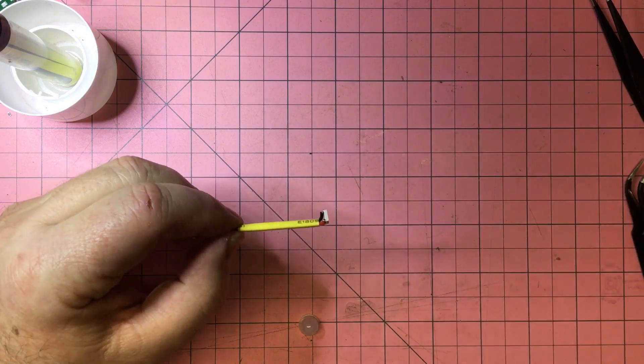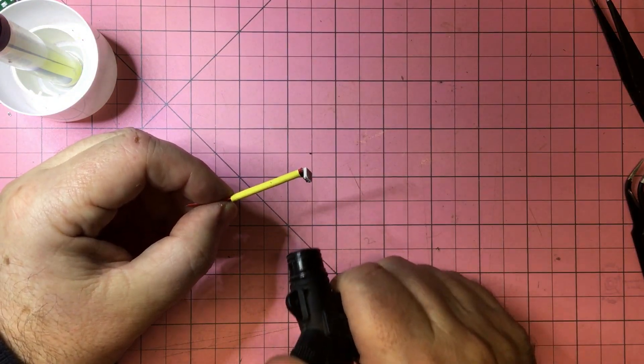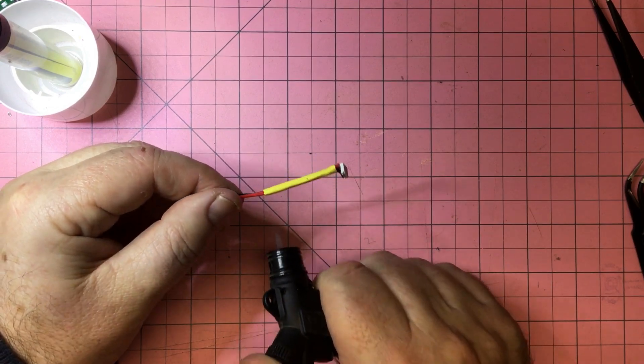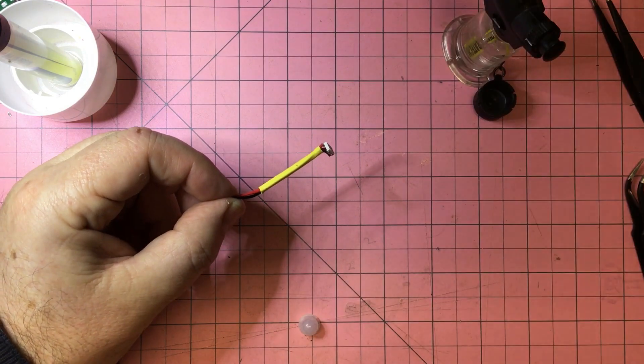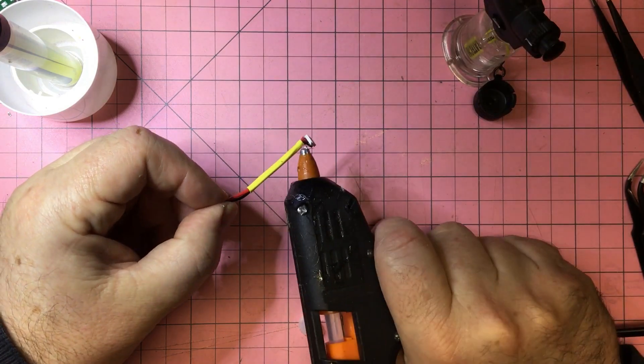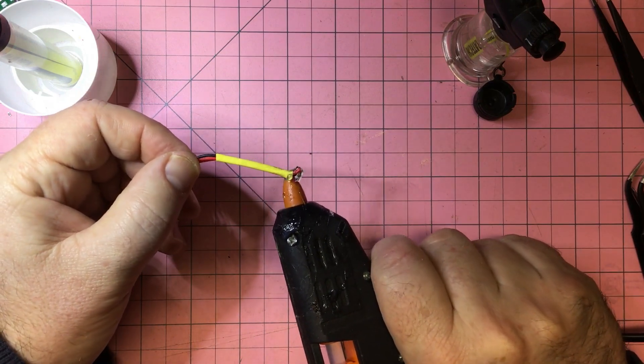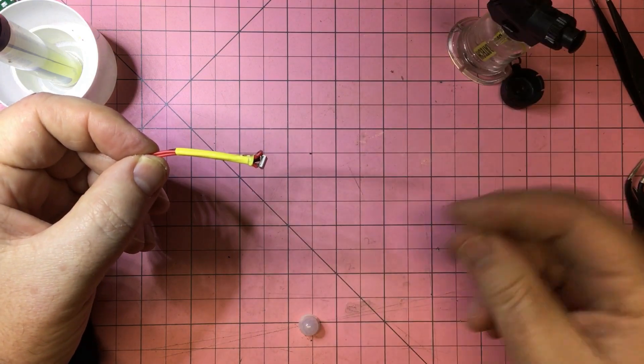And then flame that. There it is, a little bit of flame, a little bit of shrinkage. All good. Now some hot glue just around the inside there to give it structural integrity.